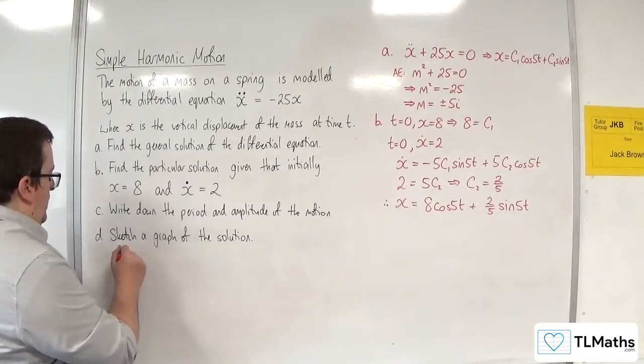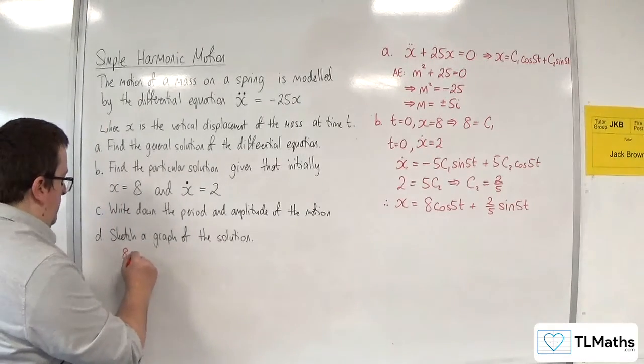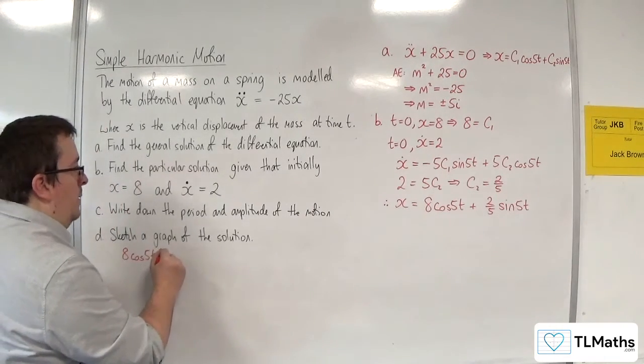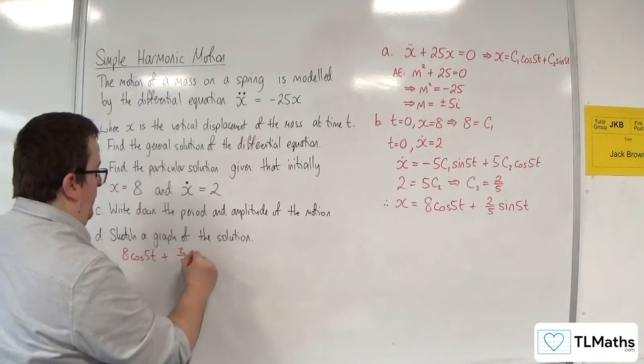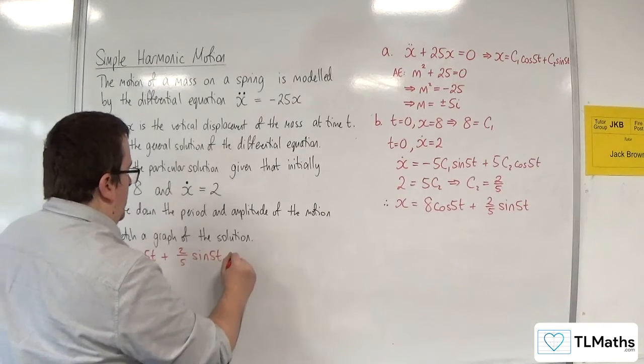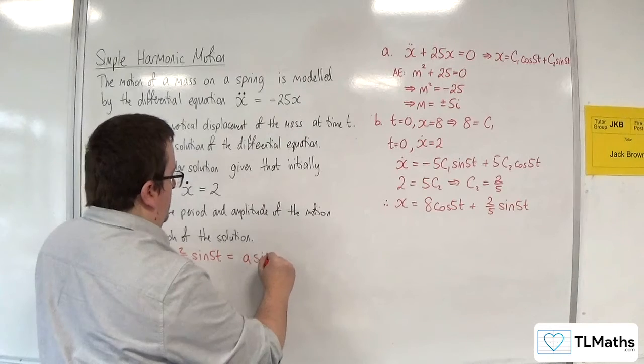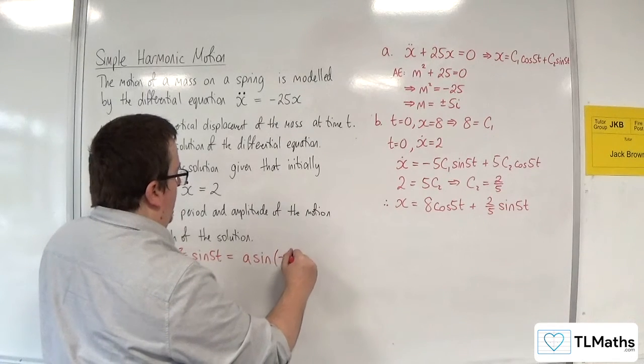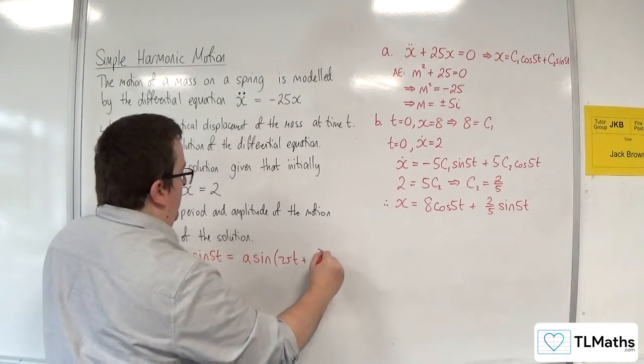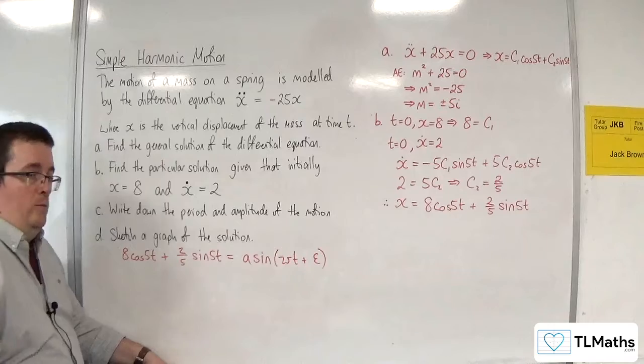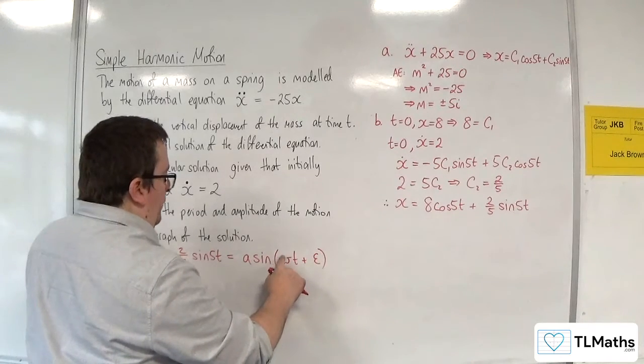So 8 cosine of 5t plus 2/5 sine of 5t is going to be equal to a times sine of ωt plus ε. Now of course, the ω here is going to have to be equal to 5.